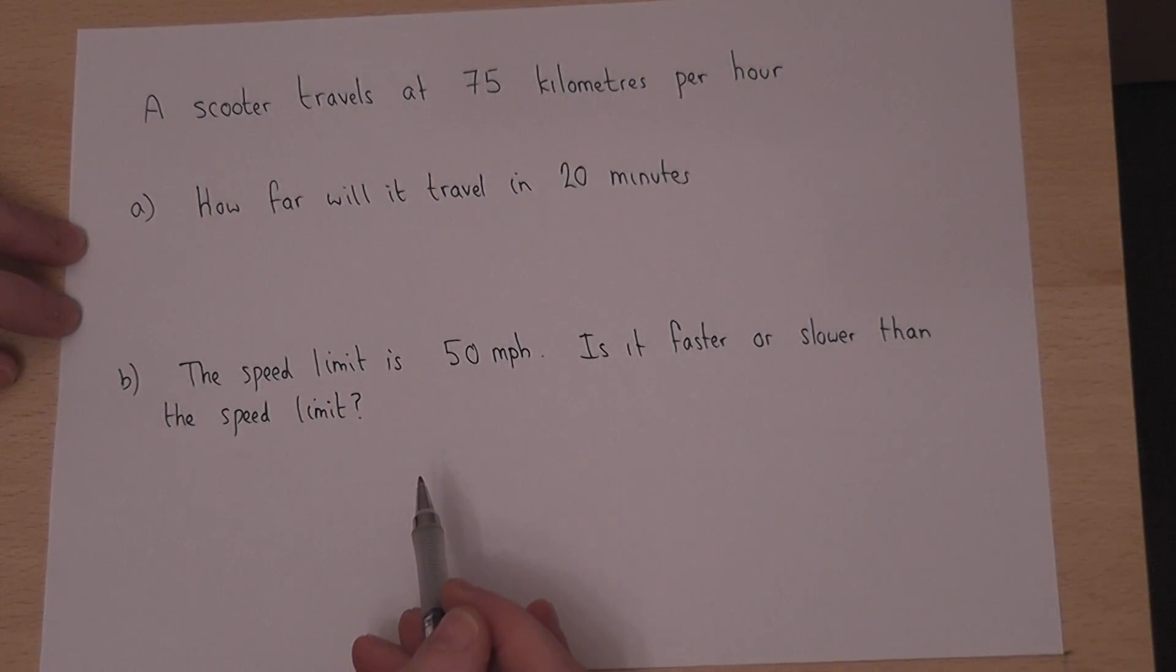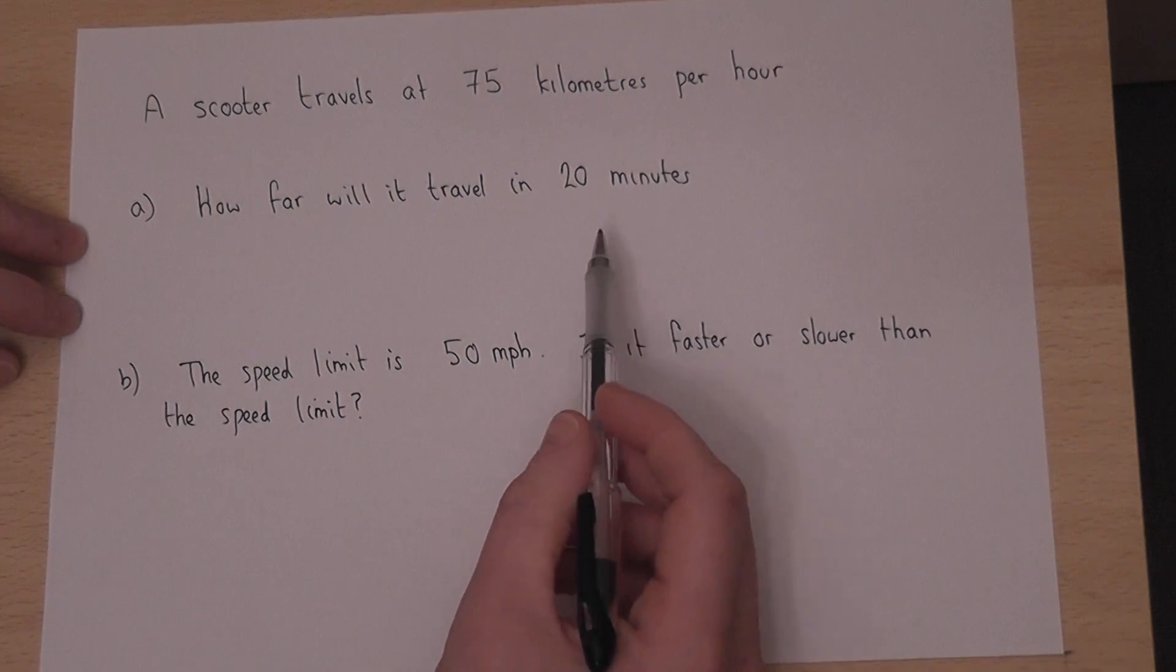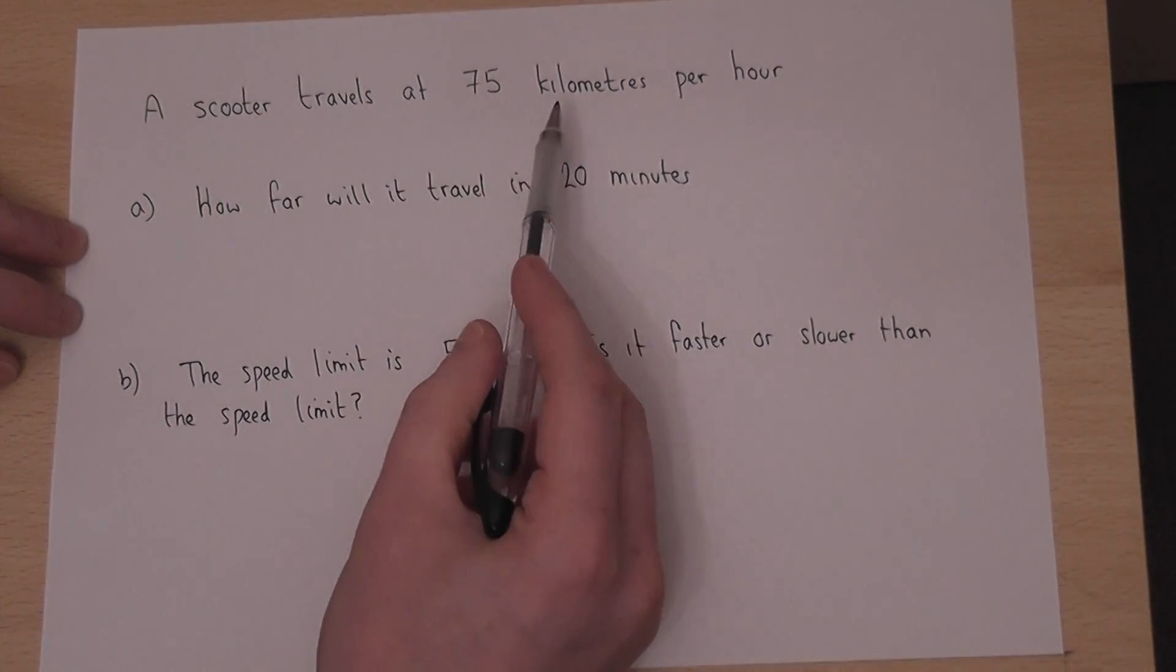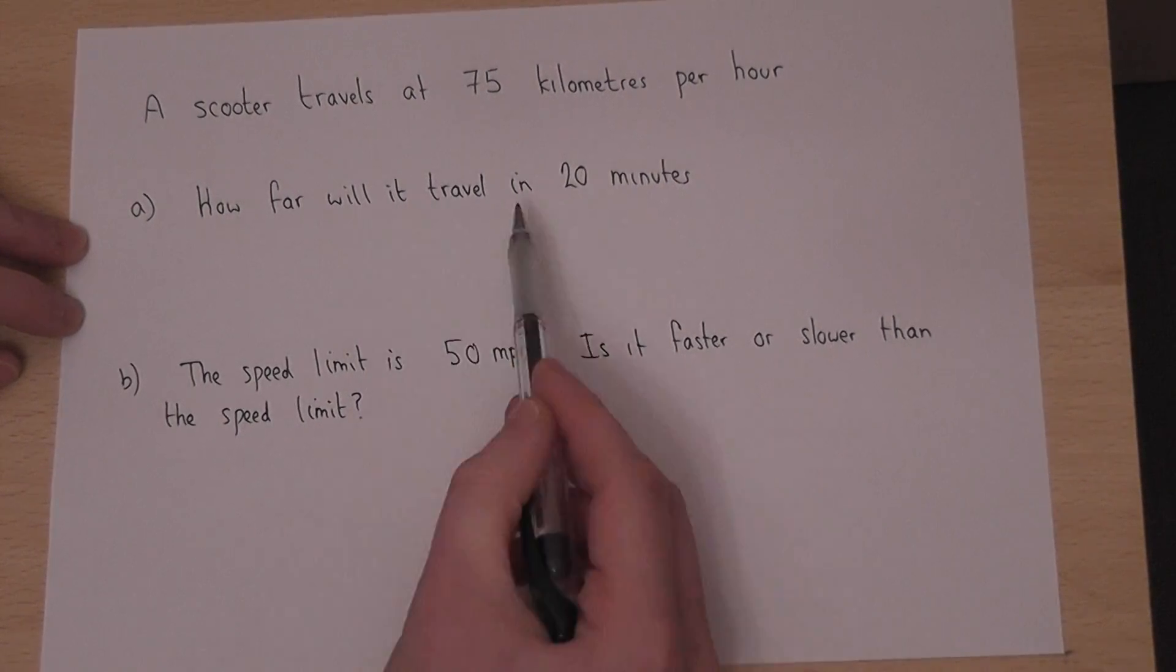This video looks at the relationship between speed and time. A scooter is travelling at 75 kilometers an hour. The question is, how far will it travel in 20 minutes?